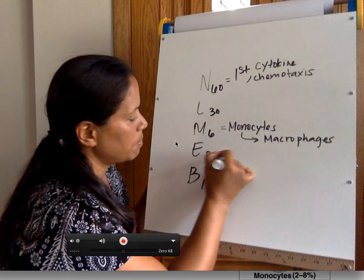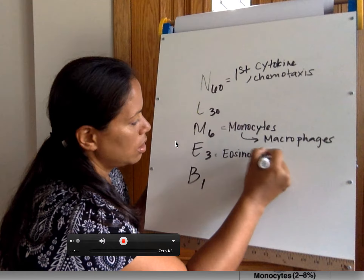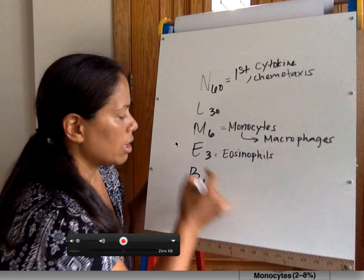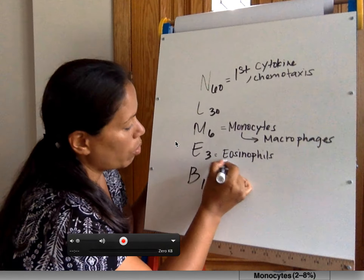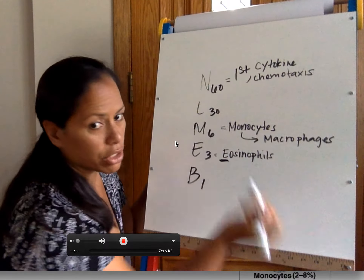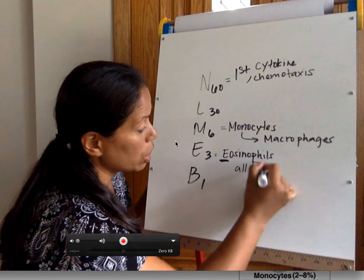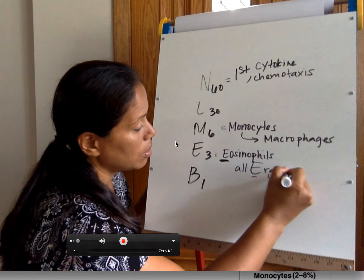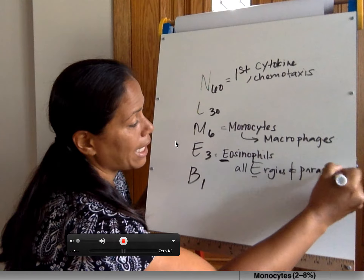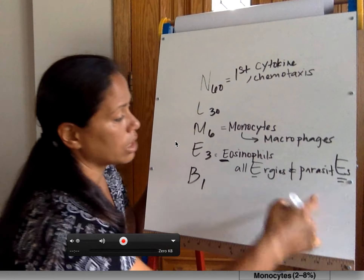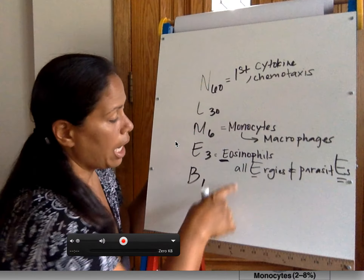Eosinophils are white blood cells that account for 3% of the overall number. And what they're associated with — I'm underlining the E for a reason — they're associated with allergies and parasites.